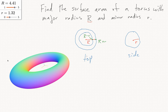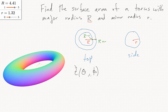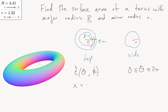The first step is to find a parametrization of the torus. We'll use a version of polar coordinates, and I'll call this T of theta and phi to avoid confusion with little r. We'll start by figuring out the coordinates of points along the central circle. That will be x equals big R cos theta.